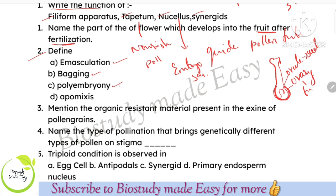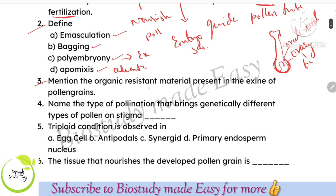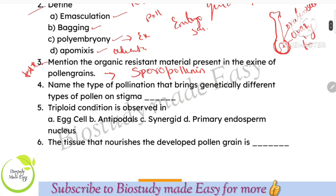Polyembryony — okay, next. Polyembryony example. Next, Apomixis — its application or advantage. Next, mention the organic resistant material present in the exine of pollen grains — very very important. That is sporopollenin. Sporopollenin is the important chemical material. The exine of pollen grains is made of sporopollenin, which is a very strong chemical that makes pollen grains hard and viable.